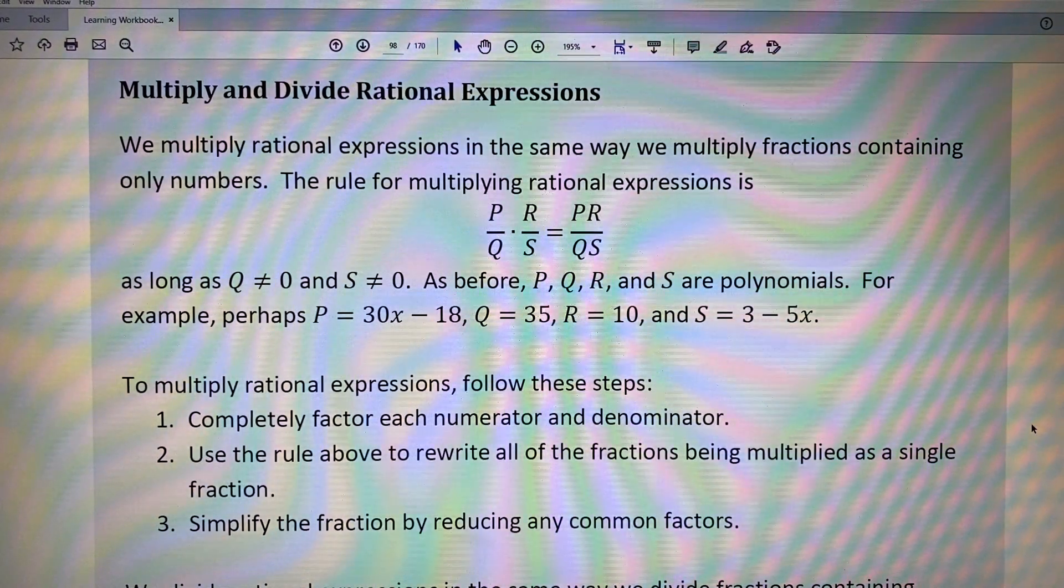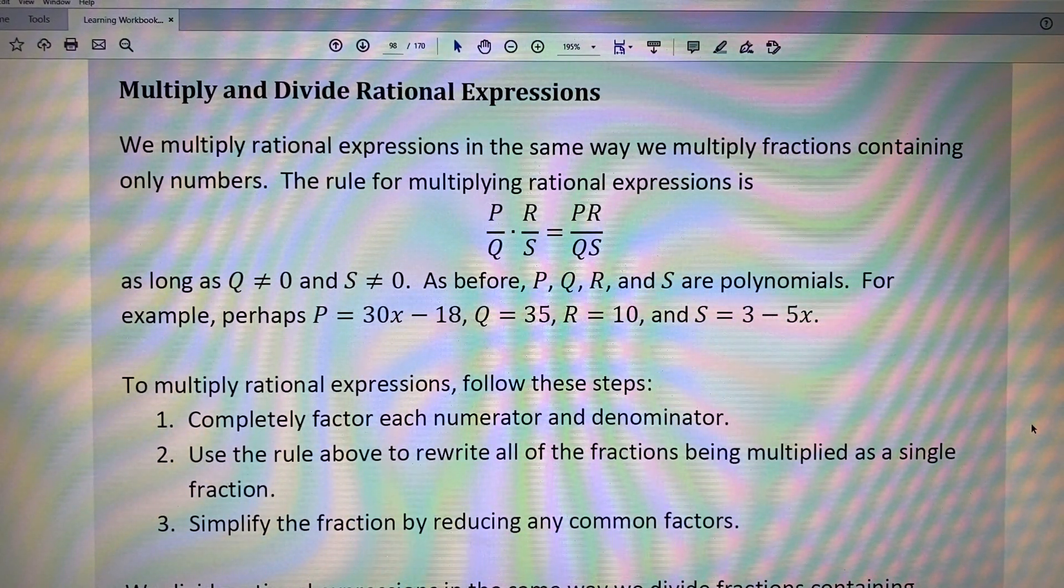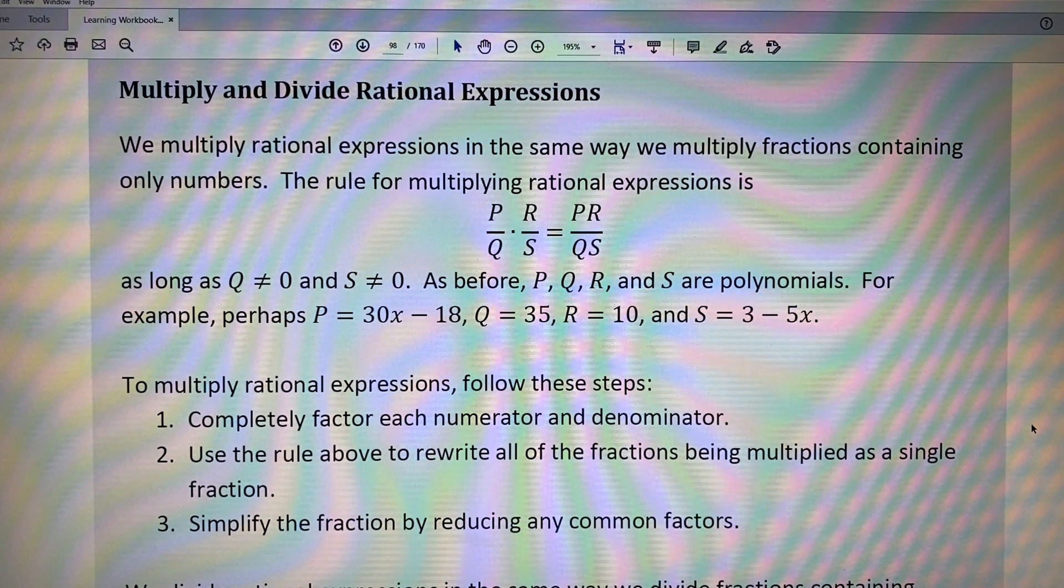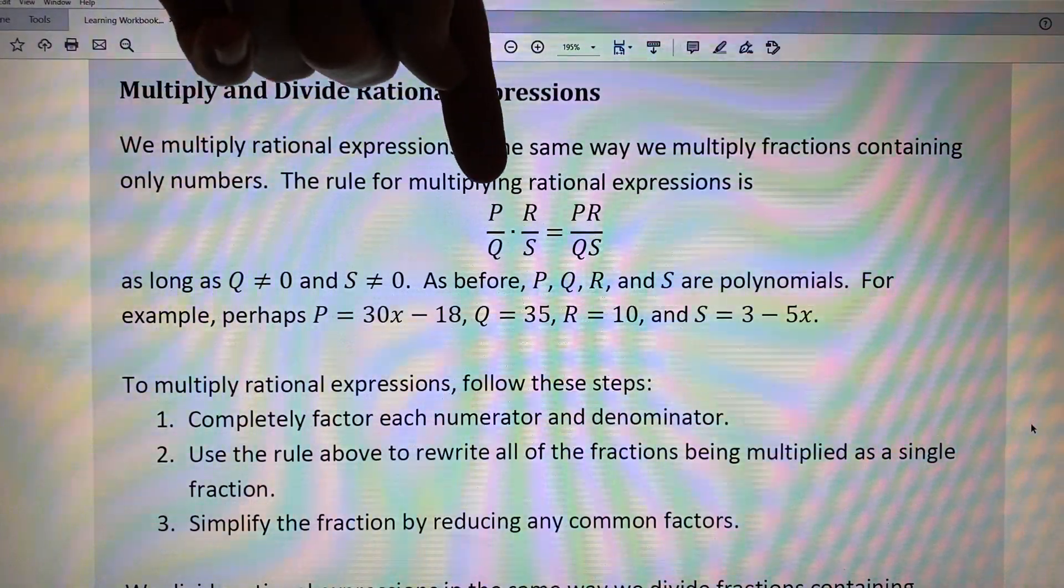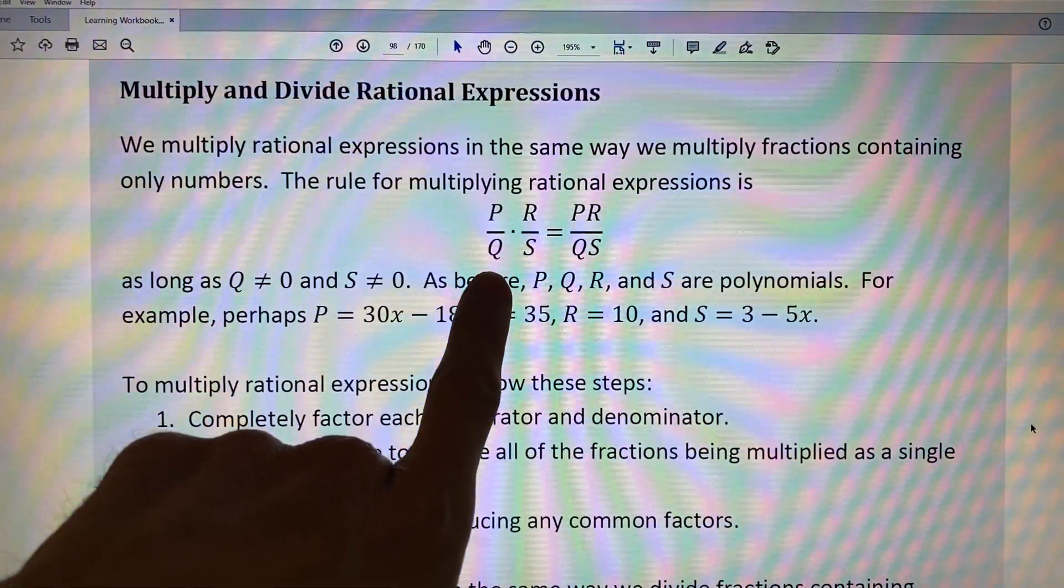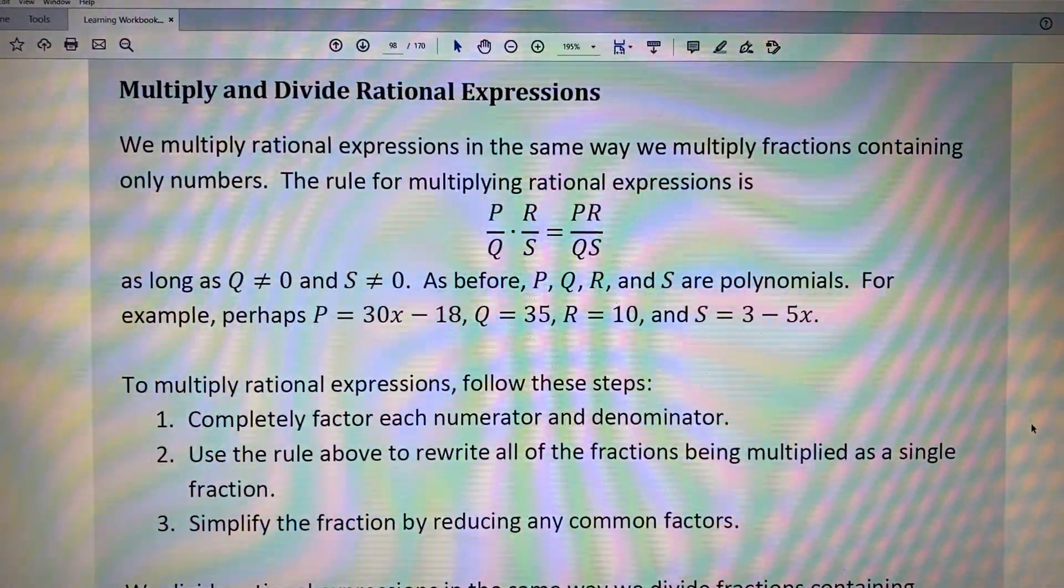The rule for multiplying rational expressions is the fraction P over Q times the fraction R over S equals the fraction PR over QS. In other words, multiply across your numerators to get your new numerator and multiply across your denominators to get your new denominator.